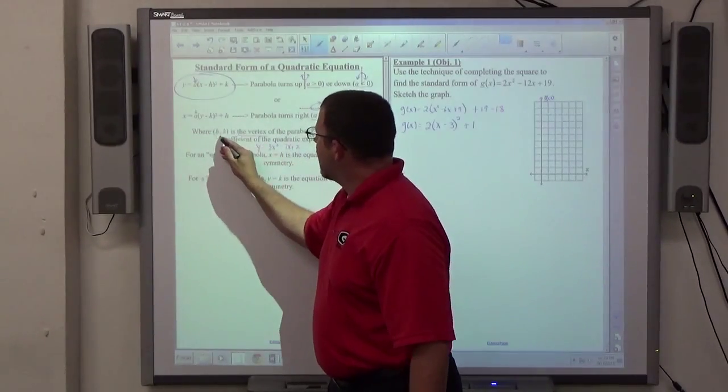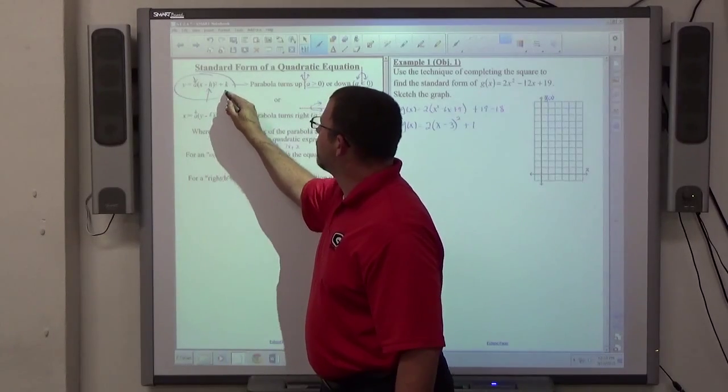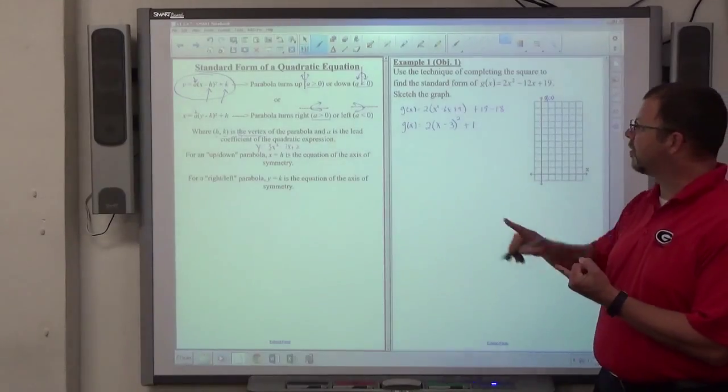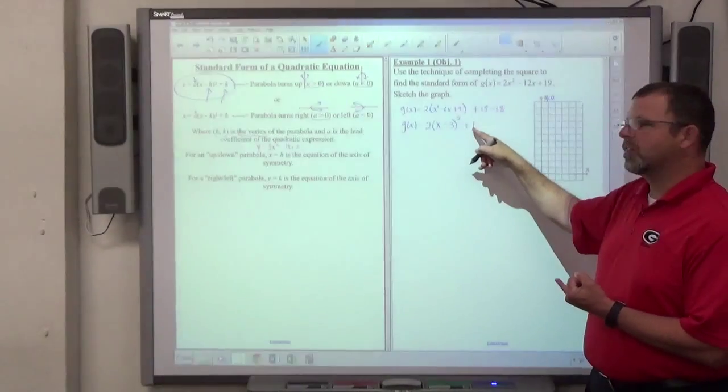It tells me hk is the vertex. Now, notice in the standard form it says minus h plus k. What that means is to find the vertex, I'm going to have to change the sign of this one, and I take the same sign as that one.